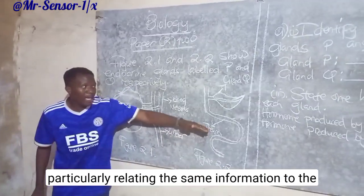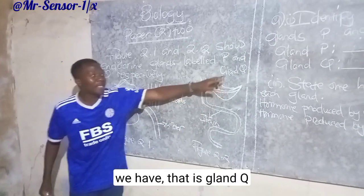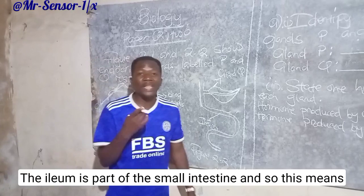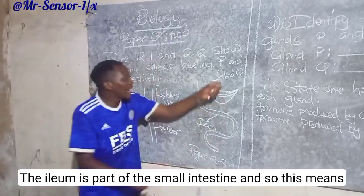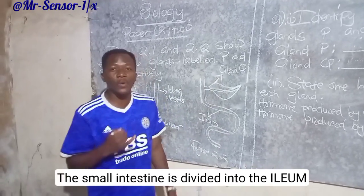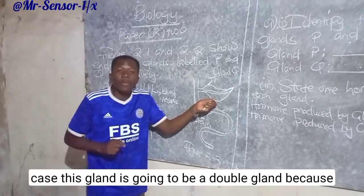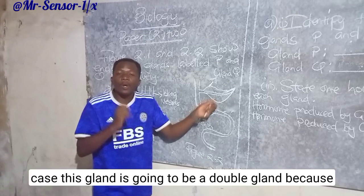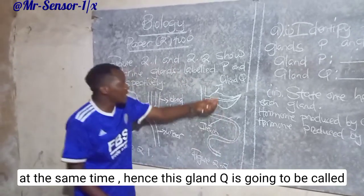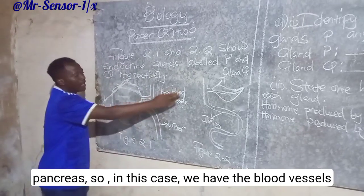Relating the same information to the ilium, on top of it we have gland Q. We are going to find that this is the ilium. The ilium is part of the small intestine, so this means gland Q is situated above the small intestine. The small intestine is divided into the ilium, the jejunum, and the duodenum. Now in this case this gland is going to be a double gland because it can secrete enzymes and also hormones at the same time. Hence this gland Q is going to be called the pancreas.